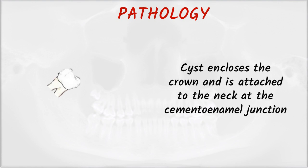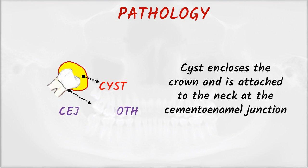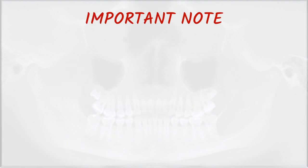Mainly involving the third molar, the cyst encloses the crown and is attached to the neck at the cemento-enamel junction. As you can see, the pressure exerted by the fluid results in the formation of the cyst, and the cyst is always attached to the CEJ of the tooth.